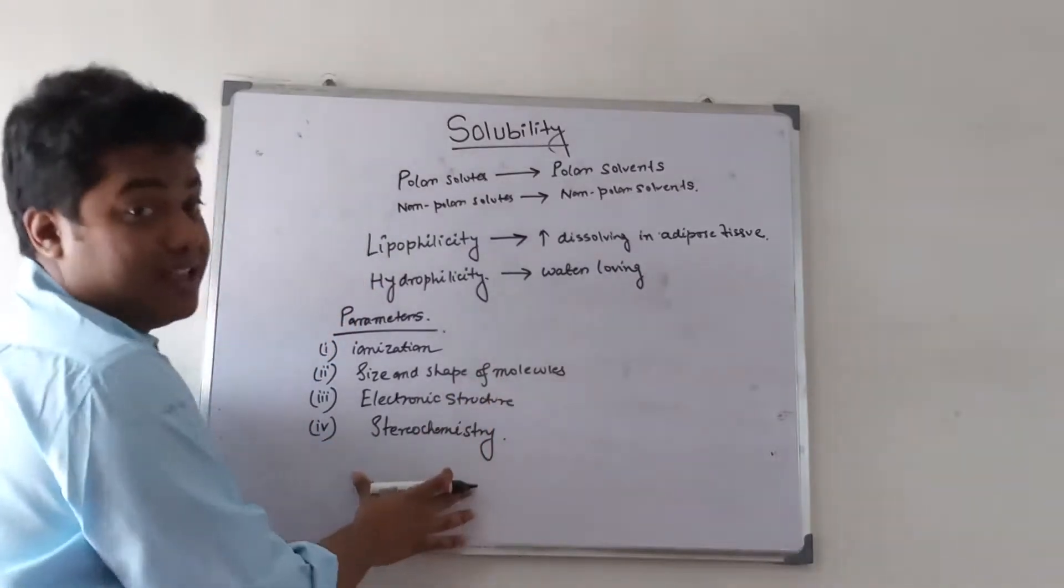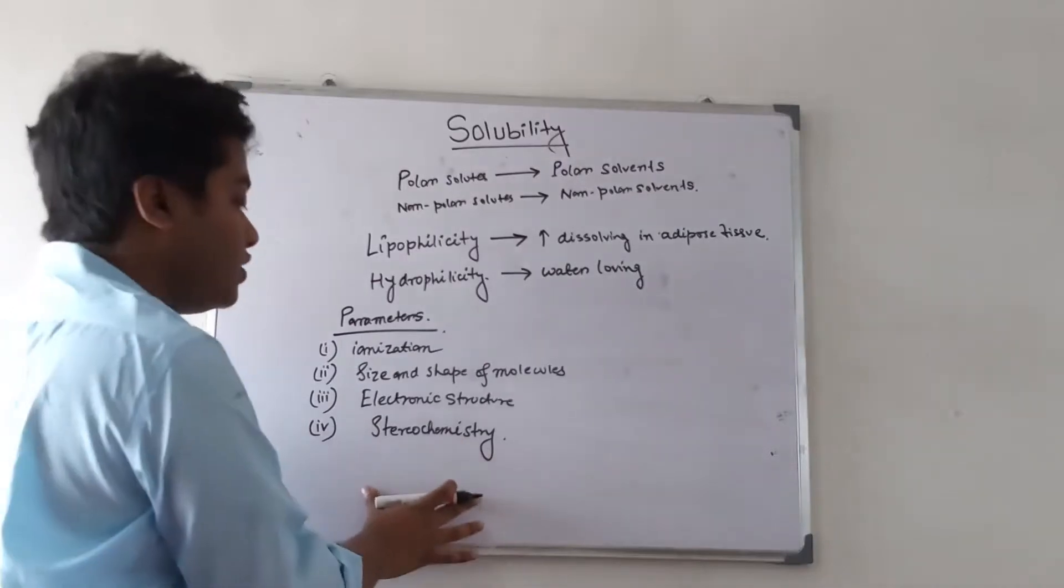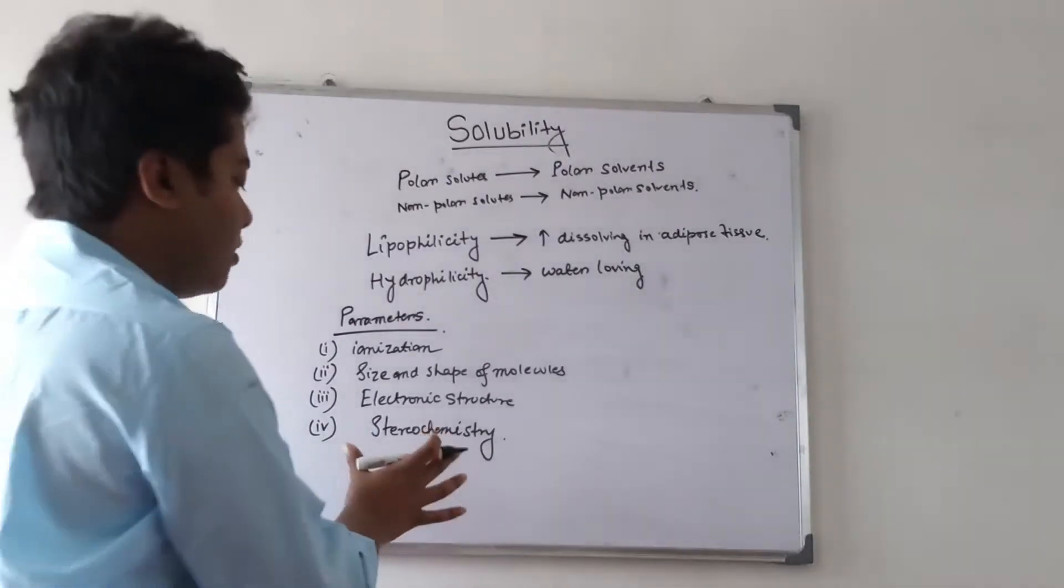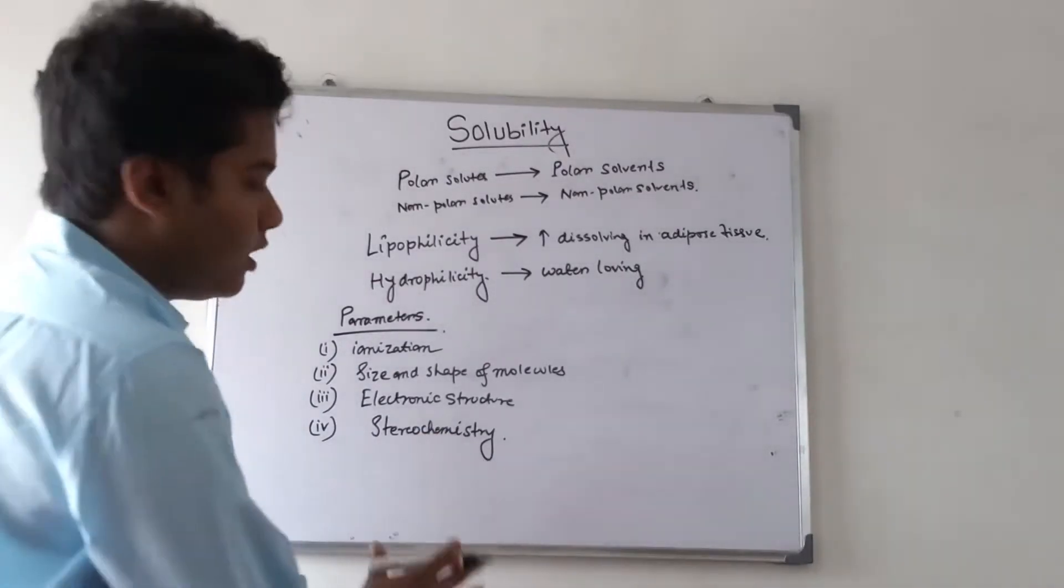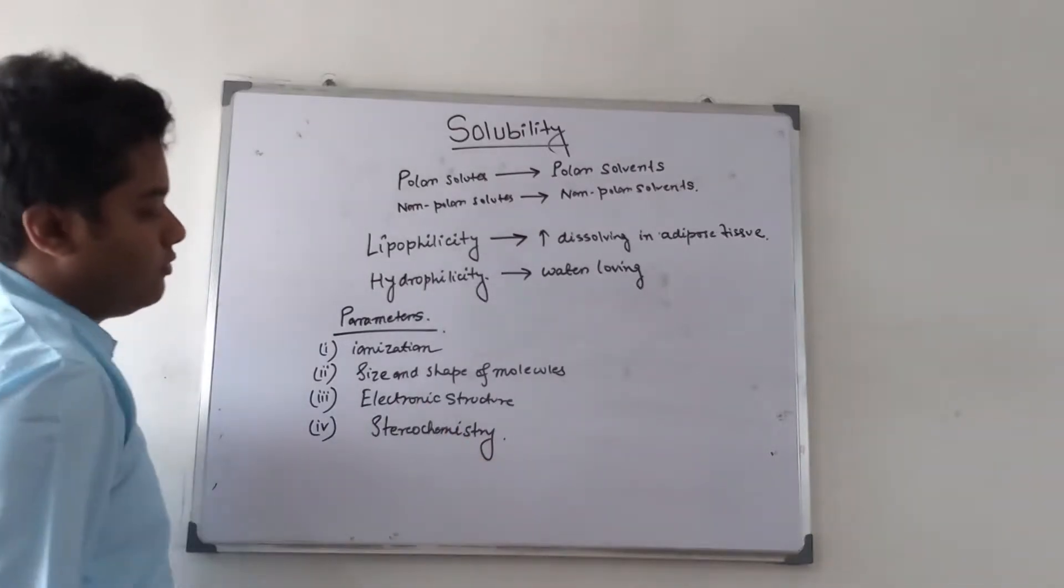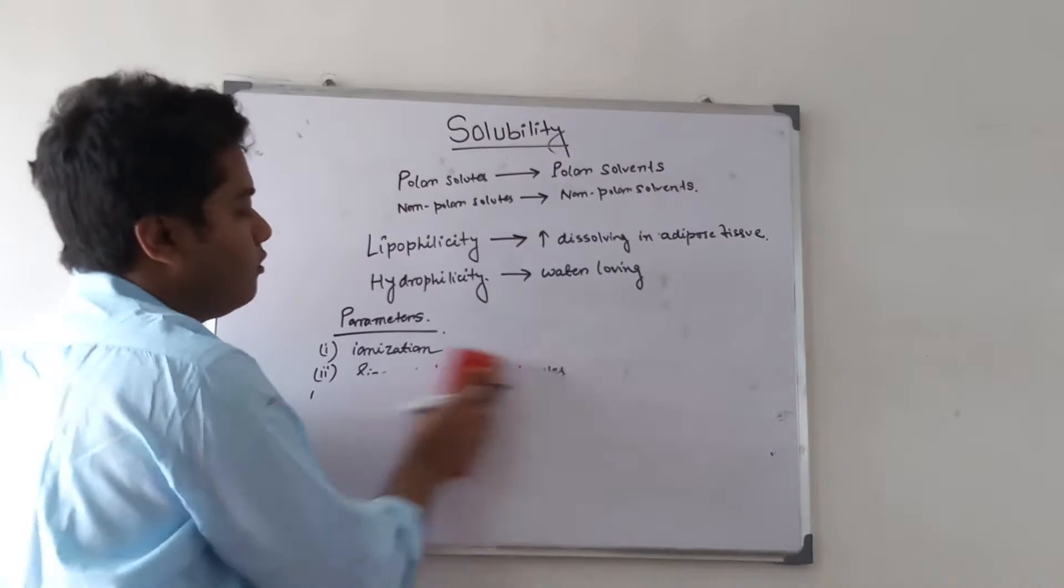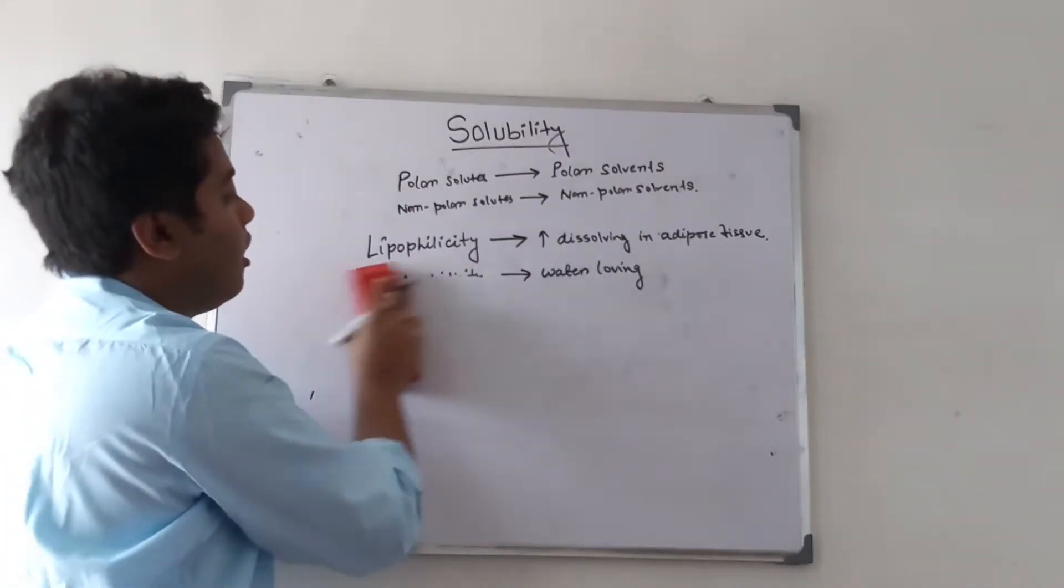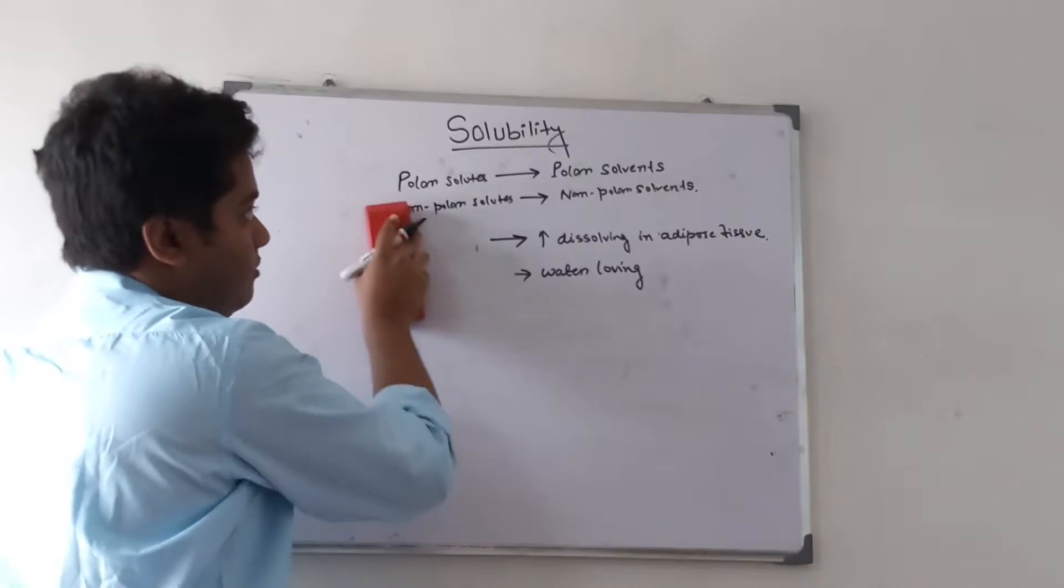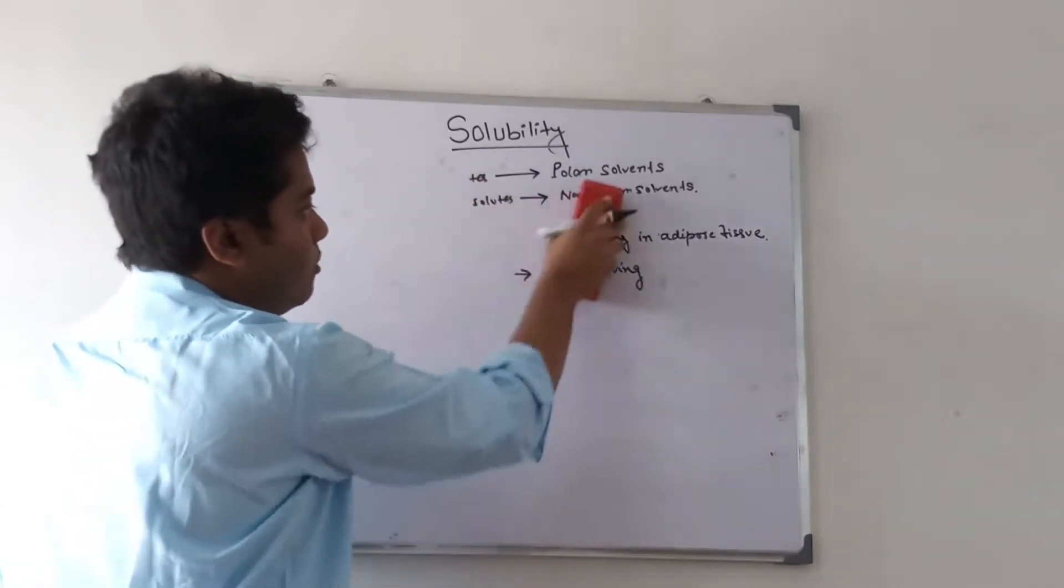Parameters which are exclusive for solute molecules include the spatial arrangement of different functional groups of a drug molecule - that is stereochemistry. For electrolytes, electrolytes have fairly high solubility, appreciable solubility.